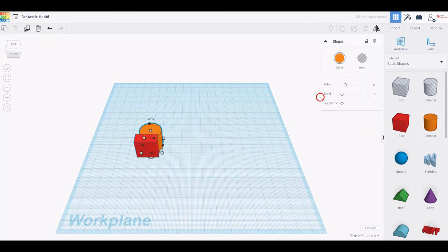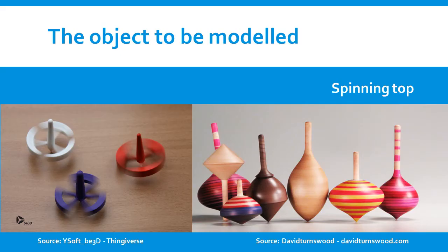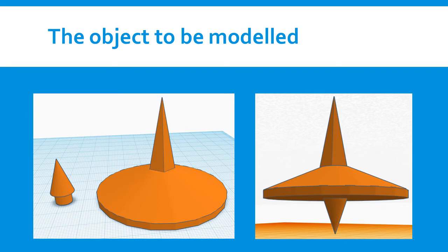Tinkercad works quite simply, by dragging a shape onto the workplane, modifying it and combining it with other shapes. In this tutorial, we will model a spinning top. A spinning top, or simply a top, is a toy made to spin rapidly on its vertical axis. It may help students learn about centrifugal forces and develop creative and practical skills. We will use some simple features of Tinkercad to create a spinning top that can be later 3D printed and used in various ways. To make the 3D printing easier, it is composed of two separate parts that will be then glued together.